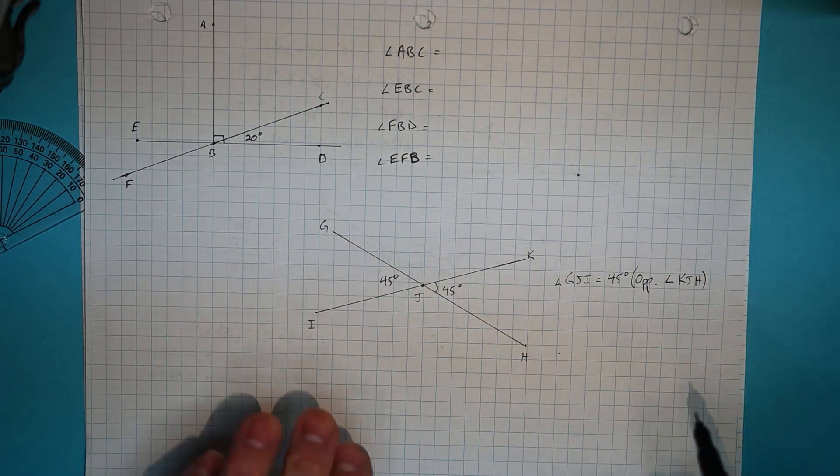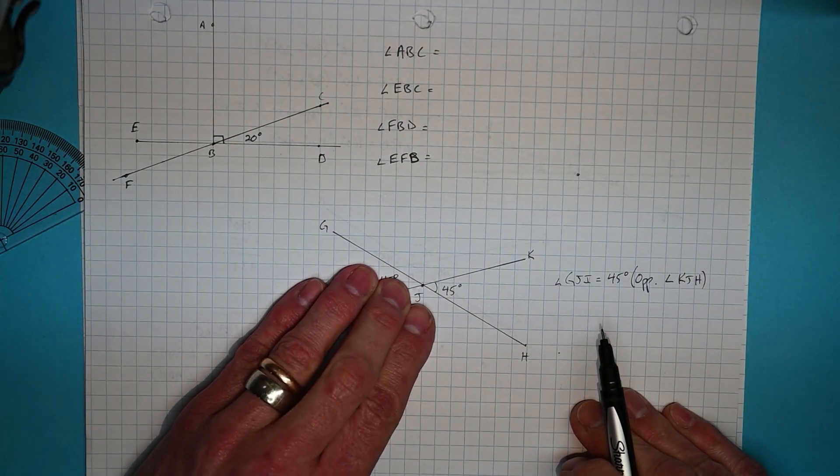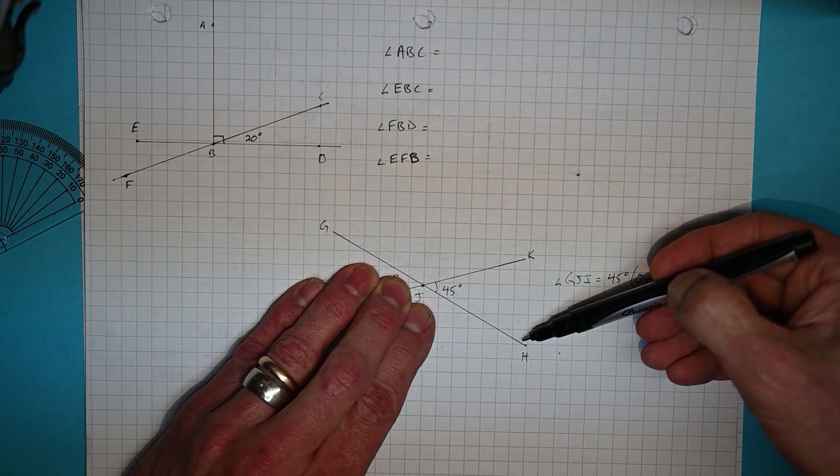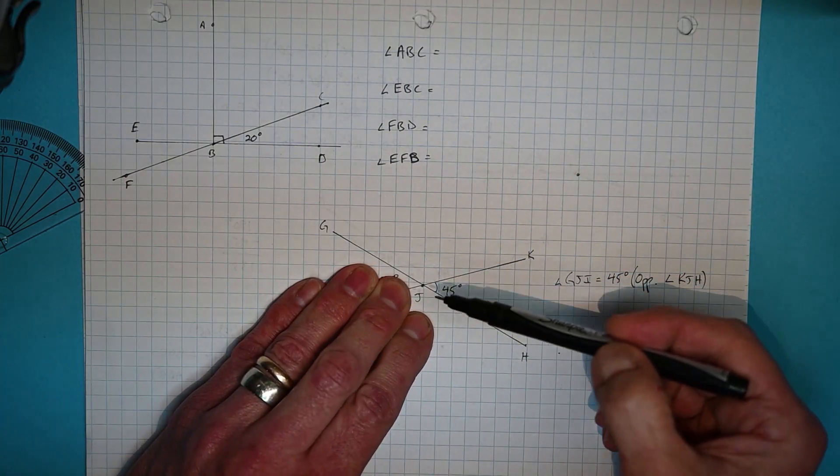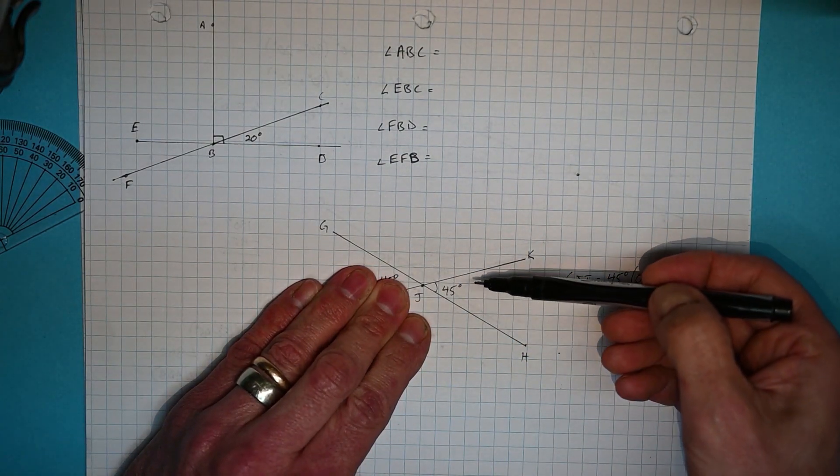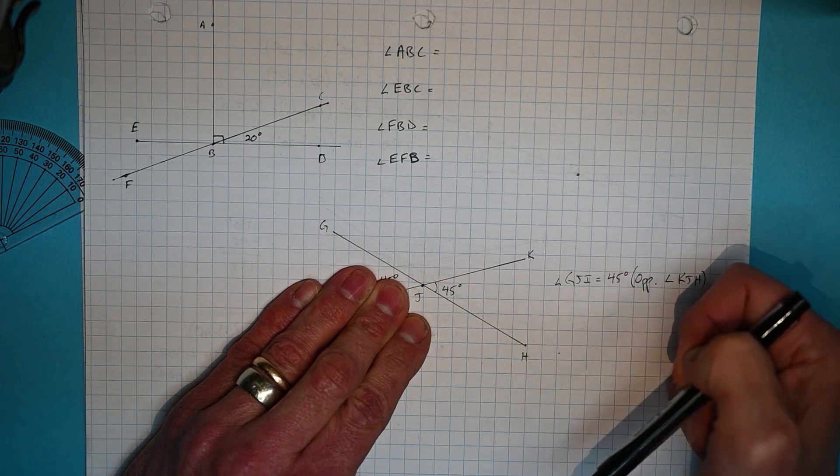You may also notice that if I kind of cover up this information down here, that we have another straight angle. GJH is straight and therefore these two are supplementary and need to add to 180.